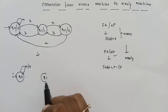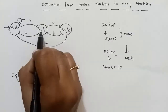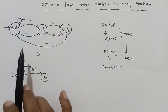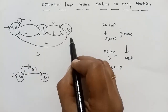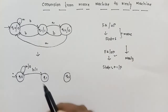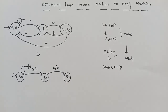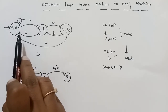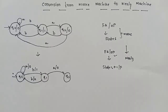Next, q1 on input a goes to q2 with output 0. Also, q2 on input a goes to q0. And q1 on input a goes to q0 with output 0.